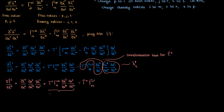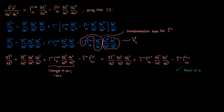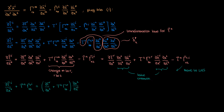Both indices r and m in the second term are dummy indices being summed over, so I can change them to any other index while being consistent. I'll change dummy index m to r, and dummy index r to t. Then I'll move all the barred coordinate system terms to one side and leave the unbarred terms on the right, and take the two partial derivative terms common in the first two terms on the right. This is what I finally end up with — I'll call this equation 2.